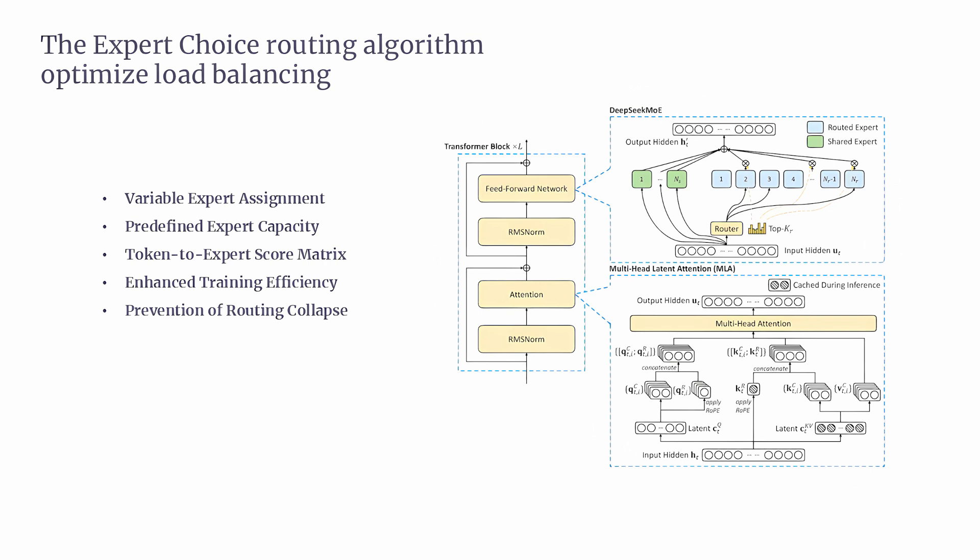In summary, the expert choice, EC, routing algorithm is crucial for DeepSeek's ability to balance the workload efficiently across many experts. By allowing variable expert assignments, ensuring predefined capacities, and using a smart scoring system, EC routing improves both the efficiency and effectiveness of the model.